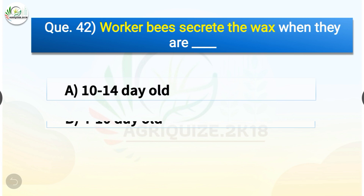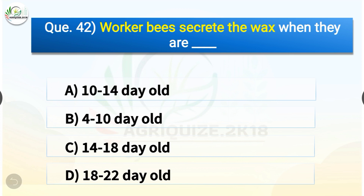Question number forty-two: Worker bees secrete the wax when they are how old? The options are: 10 to 14 days old, 4 to 10 days old, 14 to 18 days old, or 18 to 22 days old. The correct answer is option C — 14 to 18 days old. Worker bees secrete the wax when they are 14 to 18 days old.